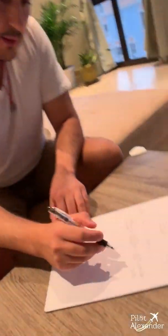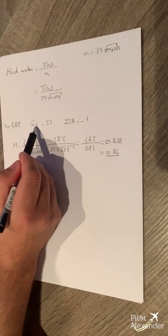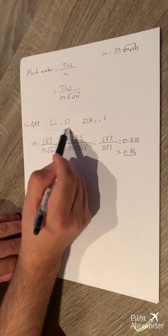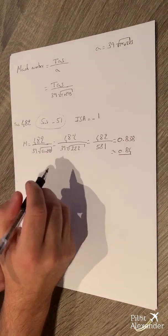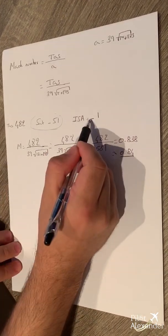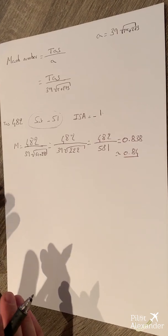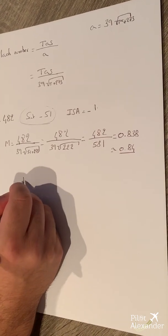If you remember the last video, you would be able to determine at which altitude we were at that time. So look — we have an ISA of minus one and a temperature of minus 51 degrees. At which altitude are we? At sea level with ISA minus one we are not at 14, so we need to calculate.